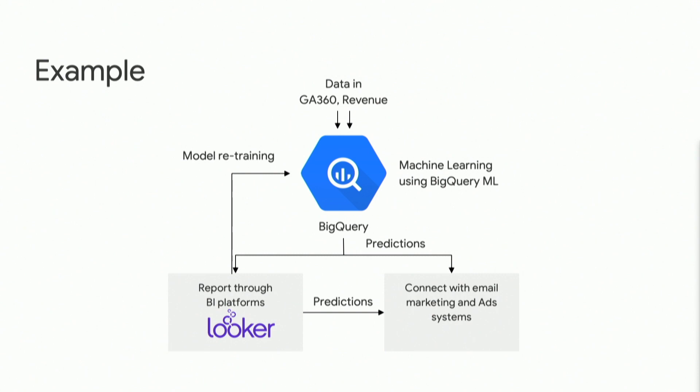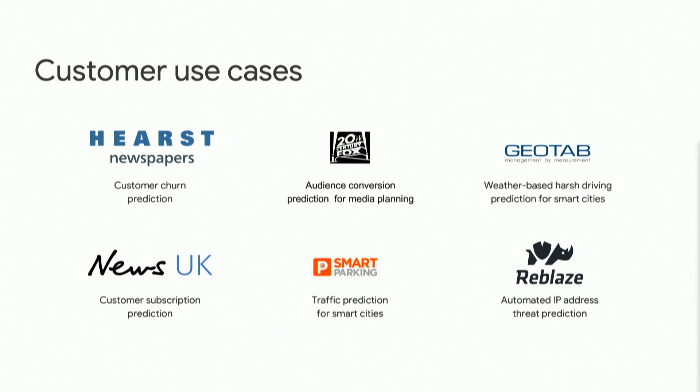The organization brings all that data into BigQuery to join it, get insights, and perform business intelligence and visualization through Looker. BigQuery enables training models using SQL, and that can all be used within Looker for visualization and reporting. While the model sits in BigQuery, we can retrain without taking data out multiple times. Finally, the model can be used for predictions such as running email marketing campaigns. We already have several sectors using BigQuery ML — from media to smart cities to security use cases.